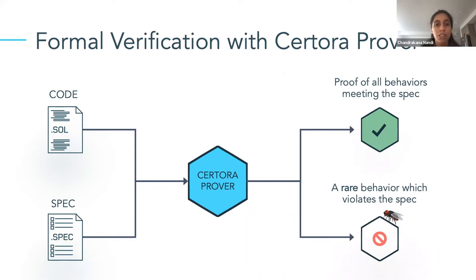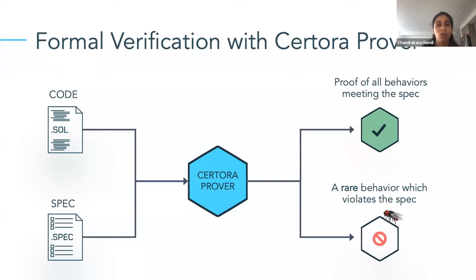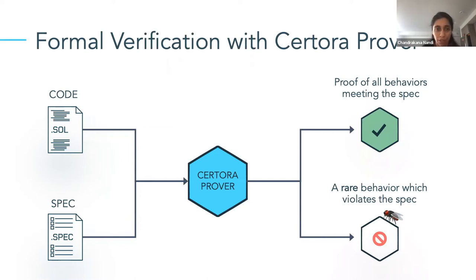Essentially, it's a tool that takes some code and a specification, which is a formal statement of the correct behavior of the program. It gives us one of two things: either it tells us that the code matches the formal specification, or it comes up with a counterexample — one particular scenario where the code does not match the spec. This is a very high-level view of what the Certora Prover is.